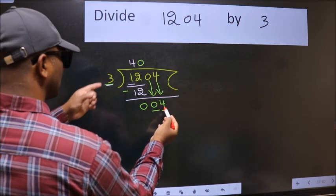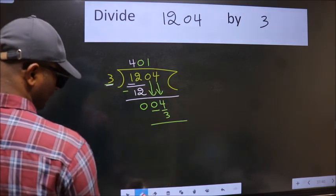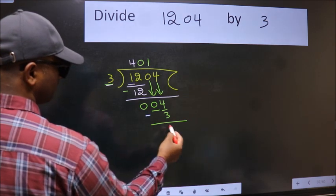A number close to 4 in the 3 table is 3 times 1 is 3. Now we subtract. We get 1.